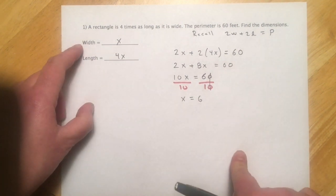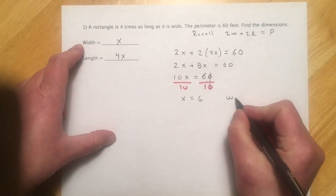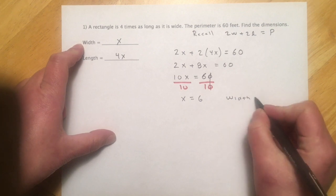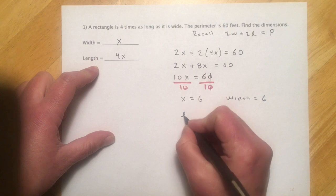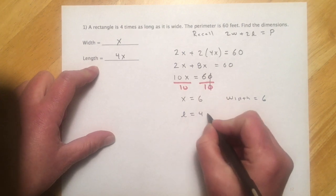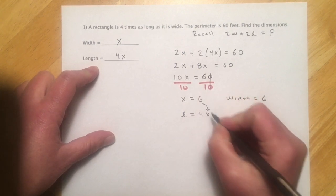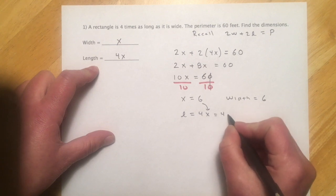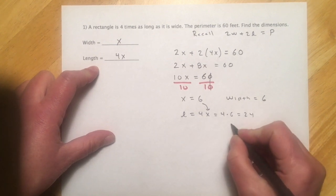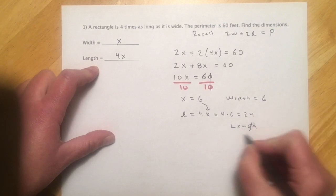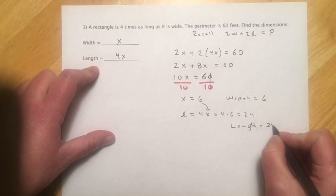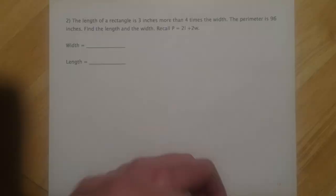And x is 6. So coming back here, okay, what was x again? x is the width. So the width equals 6. And then the length, well, the length equals 4x. So plugging this in, I get 4 times 6 equals 24. So then length equals 24.